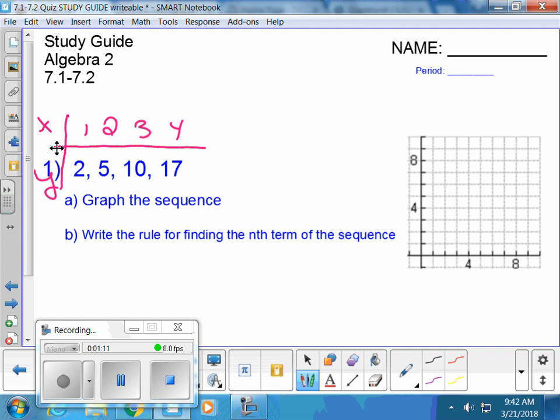So 1 comma 2 is a location that we will graph with a dot. 2 comma 5 is a location you will graph with a dot. 3 comma 10 is a location you will graph with a dot. And then 4,17 is off the picture, so don't worry about it. Should we connect our dots now? No, this is called a discrete data set with no decimal X values. No decimals in the domain. So you're done.